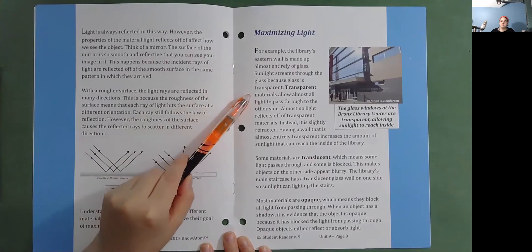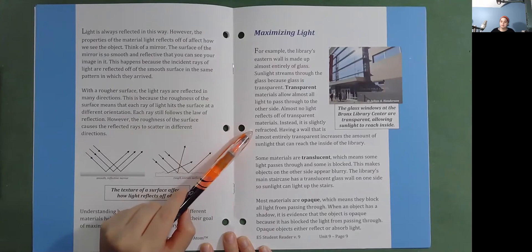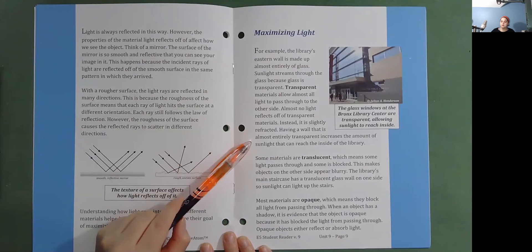Transparent materials allow almost all light to pass through to the other side. Almost no light reflects off of transparent materials. Instead, it is slightly refracted. Having a wall that is almost entirely transparent increases the amount of sunlight that can reach the inside of the library.